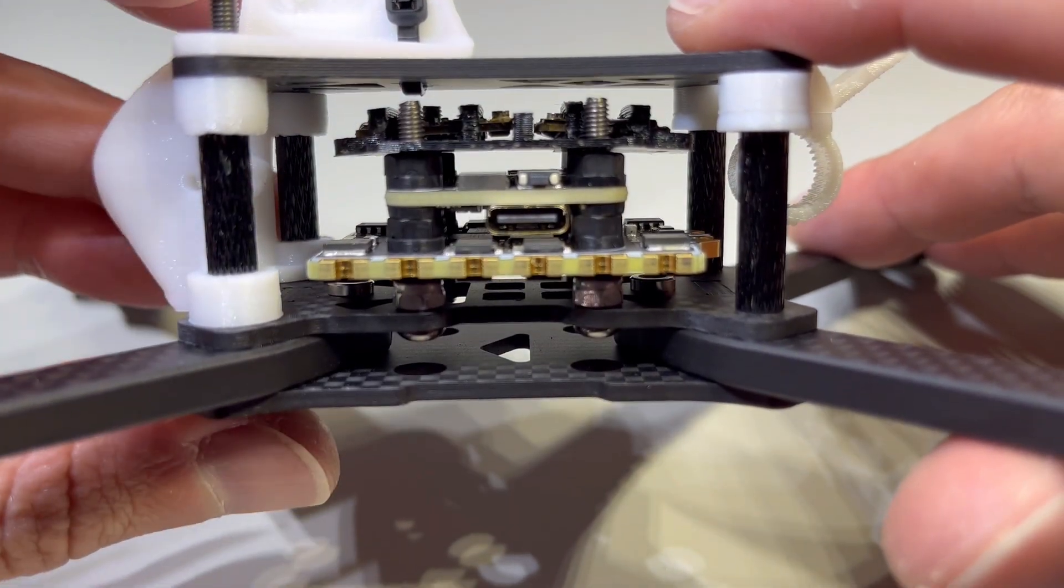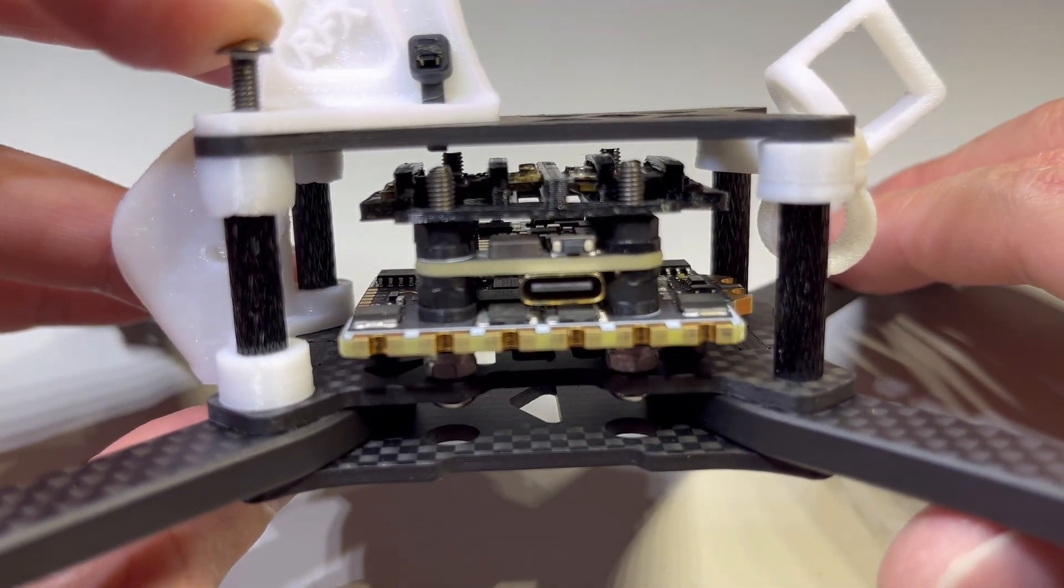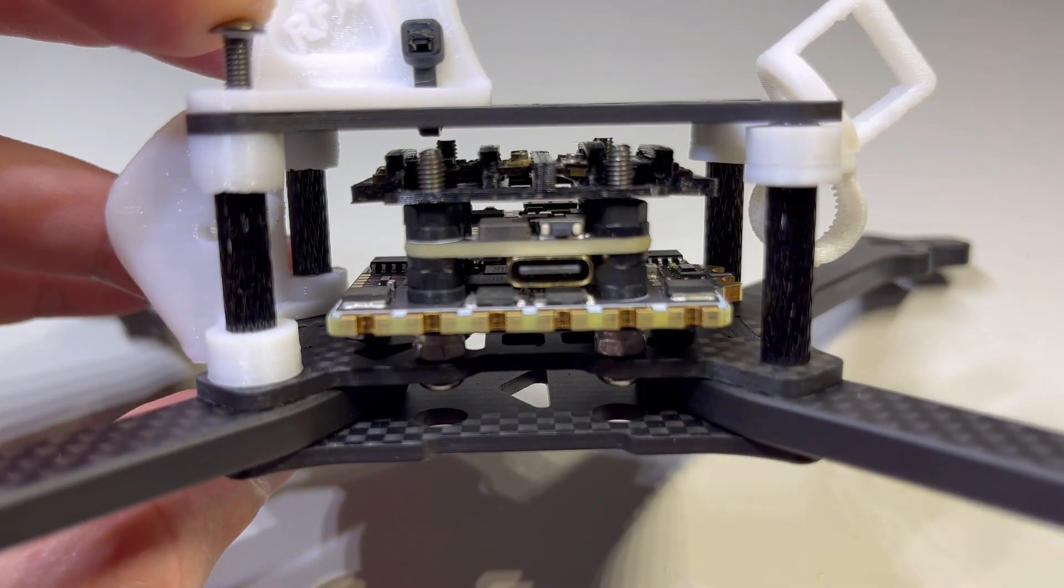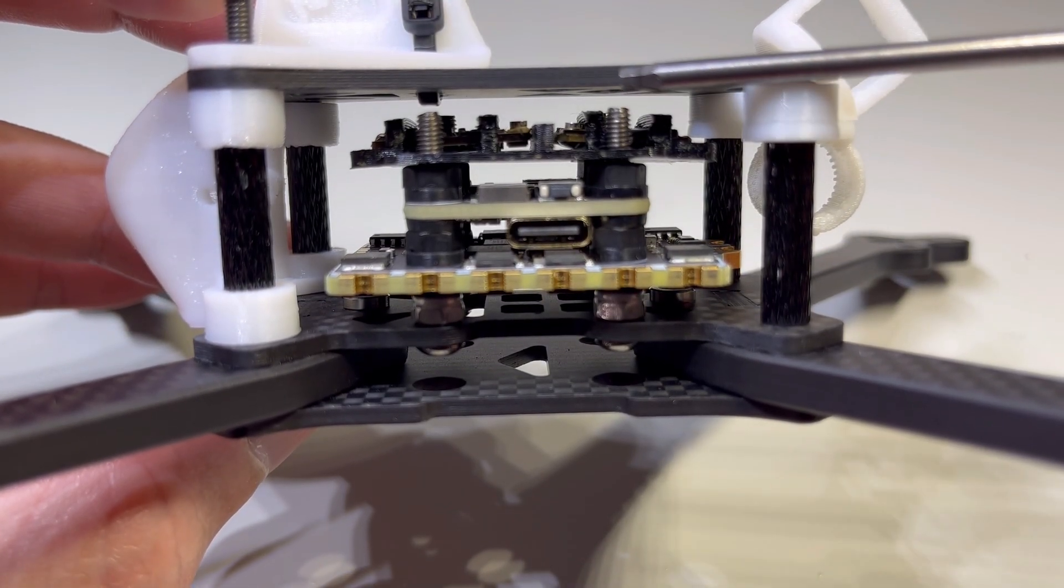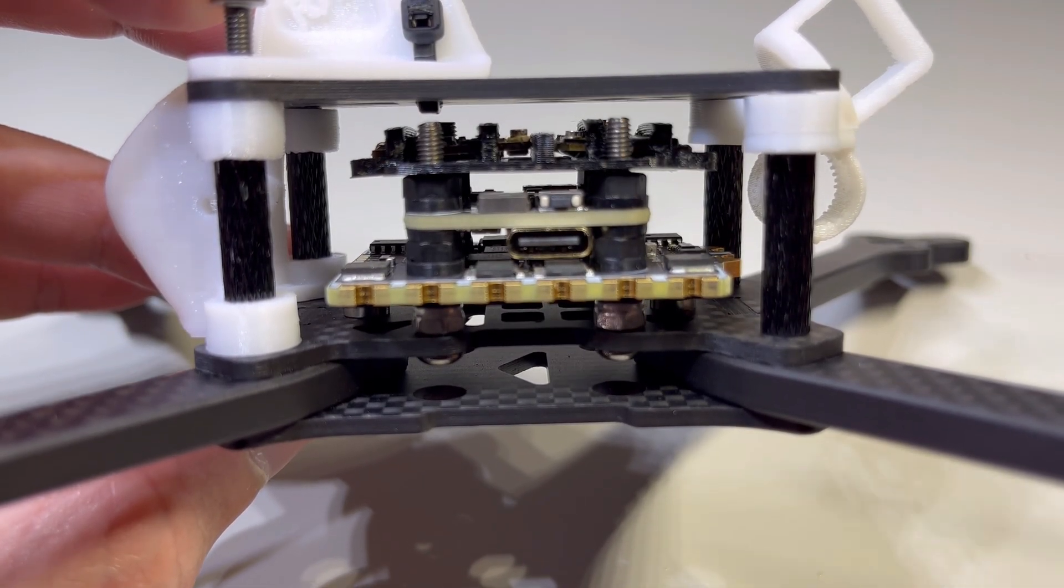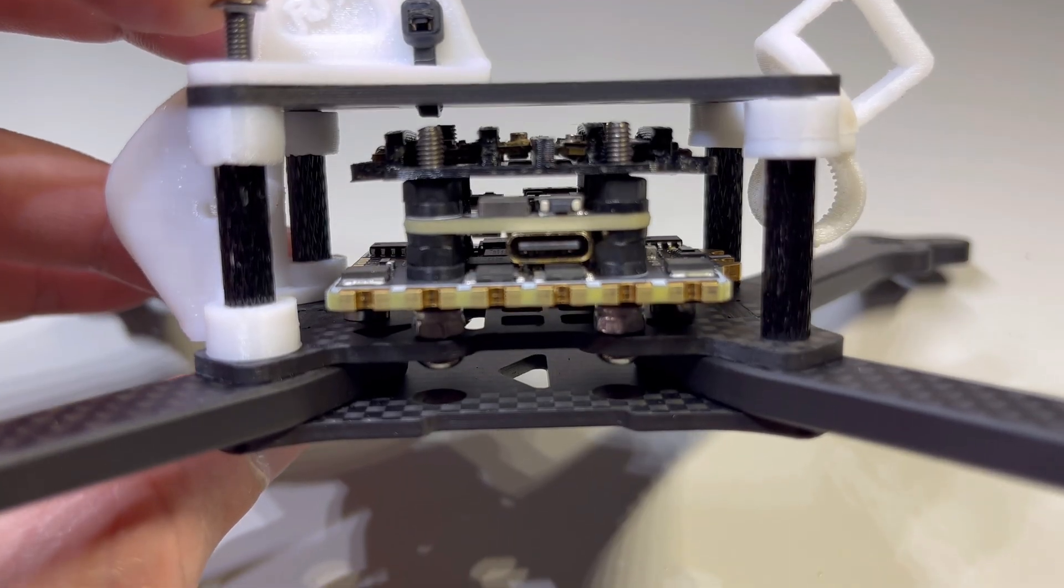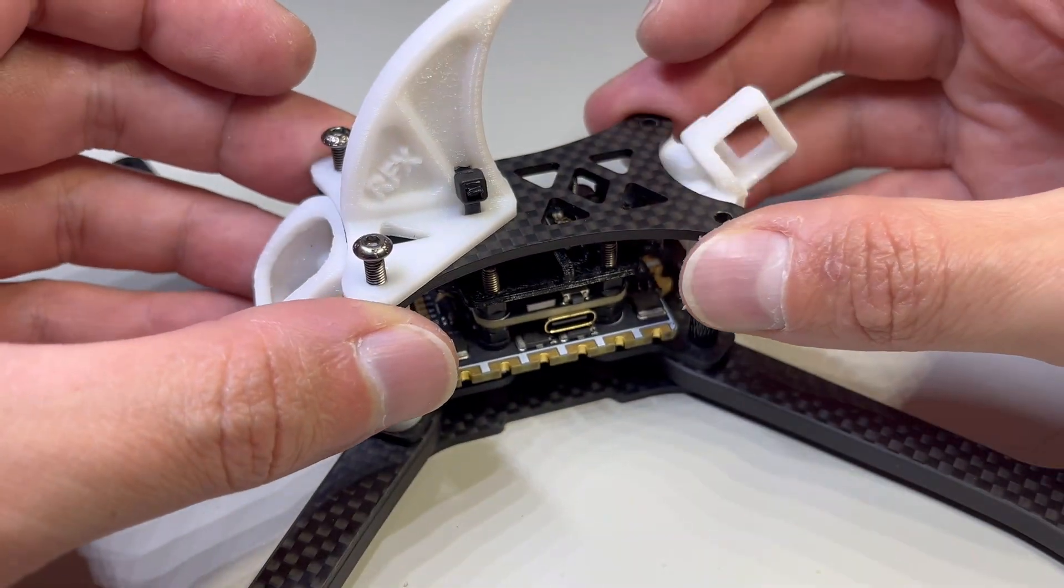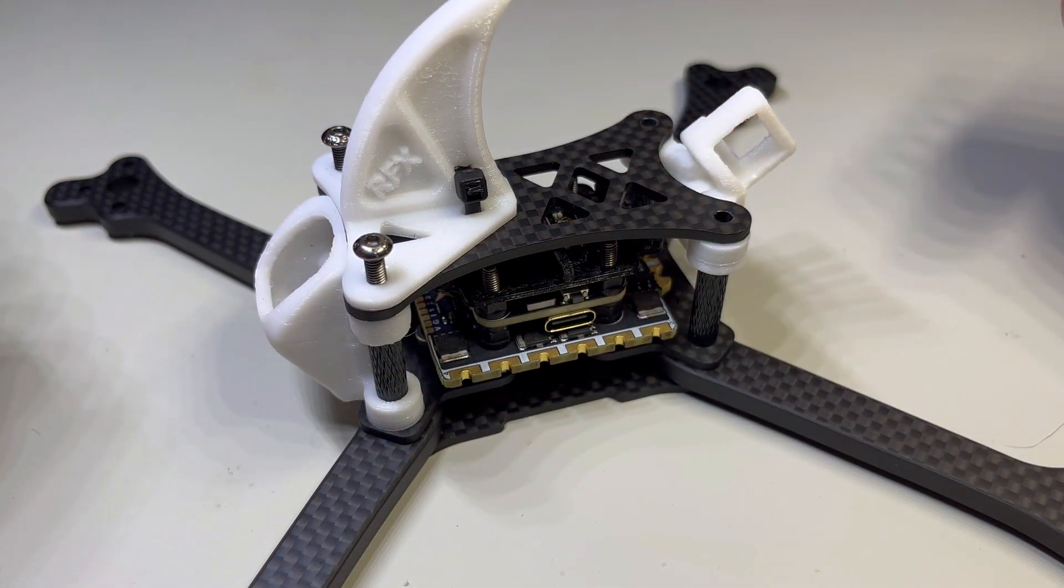You can see once we have the top plate on, we have basically space between every component. This is called, I like to call it crash space. So, when you crash, you can break your top plate, bend your standoffs, and so forth. And all this space between the components is going to be really nice for crashes.